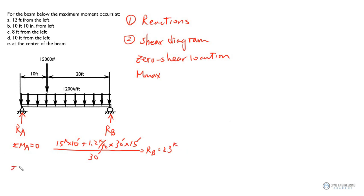And then you can use this equation, the force equilibrium equation in y direction to determine RA. So you have 15 kip plus 1.2 kip per foot times 30 minus 23 kip. And this is your RA, so you have 28 kip. Now you know this is 28 kip, this is 23 kip.